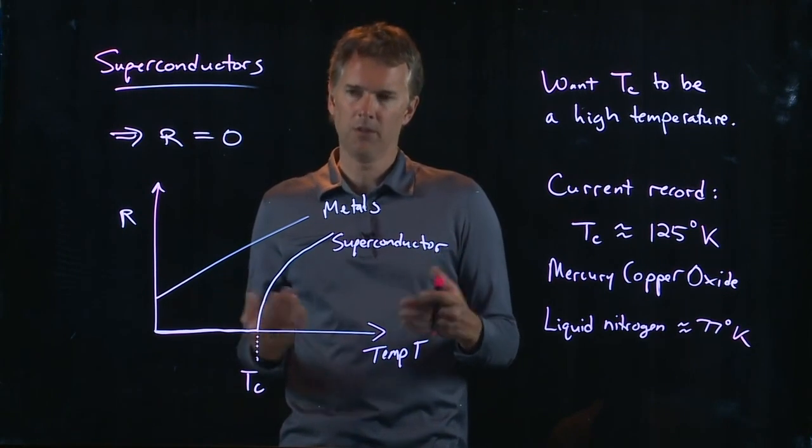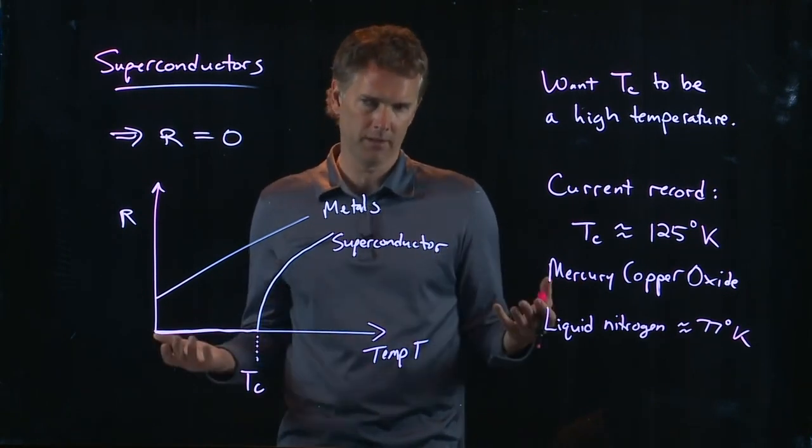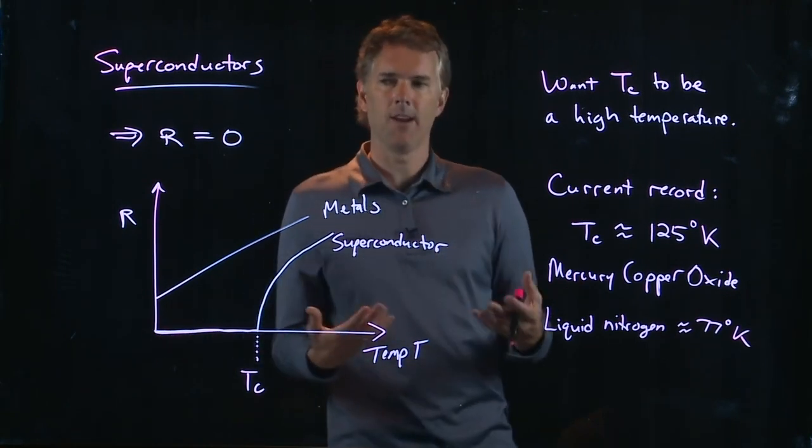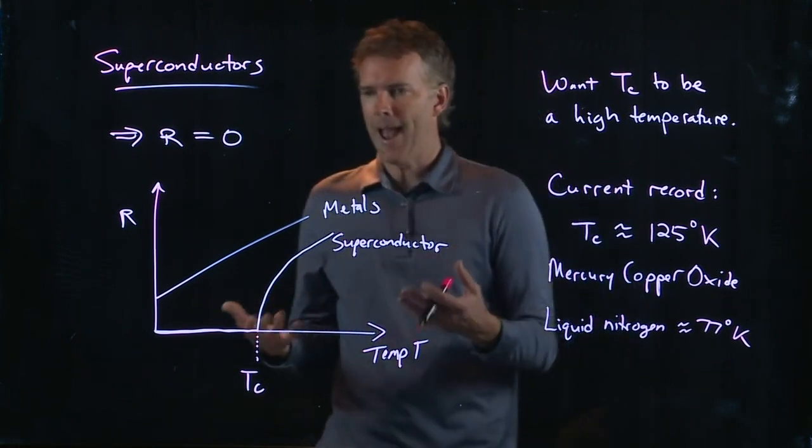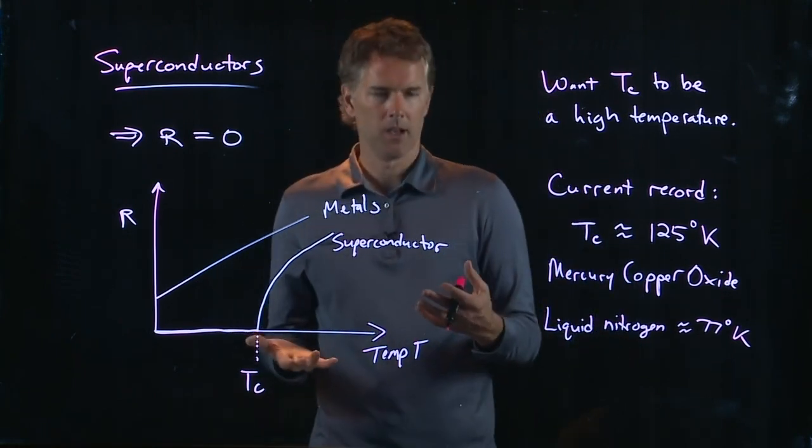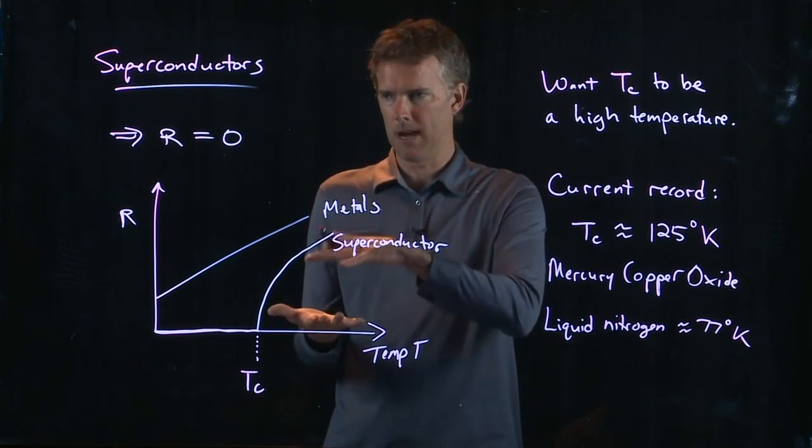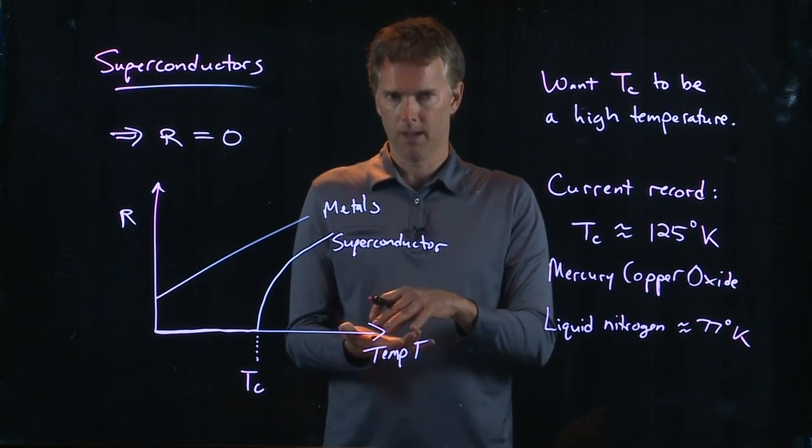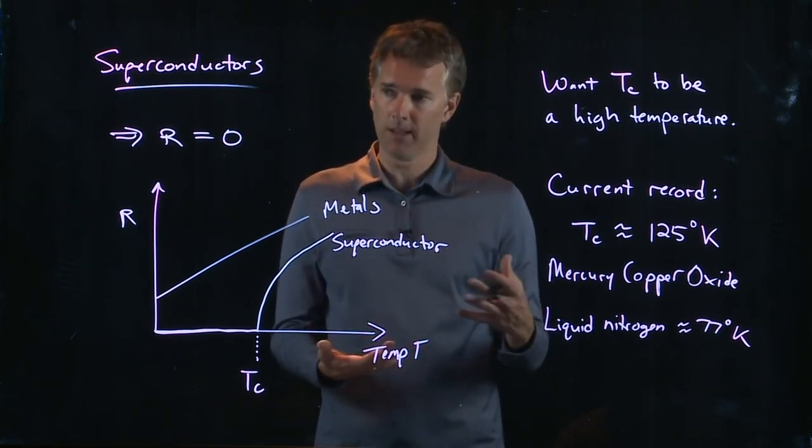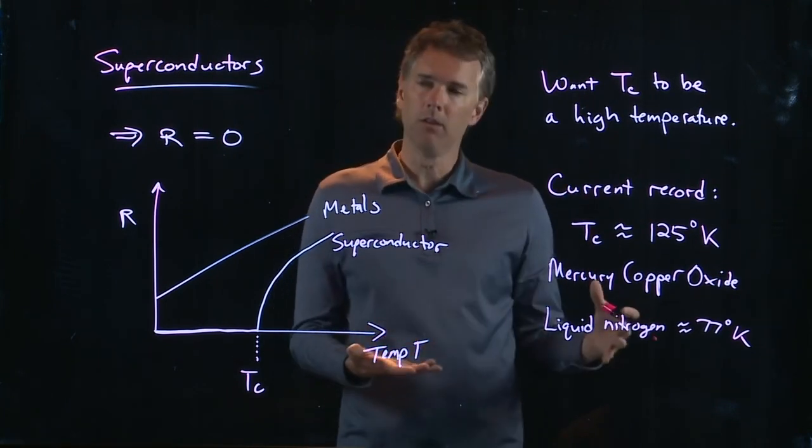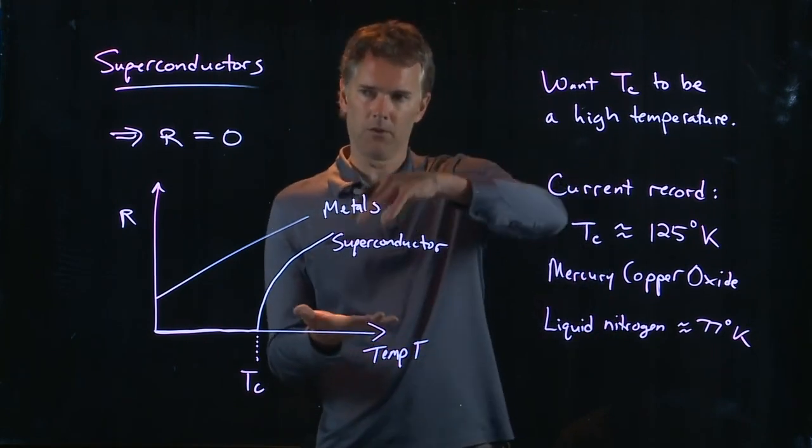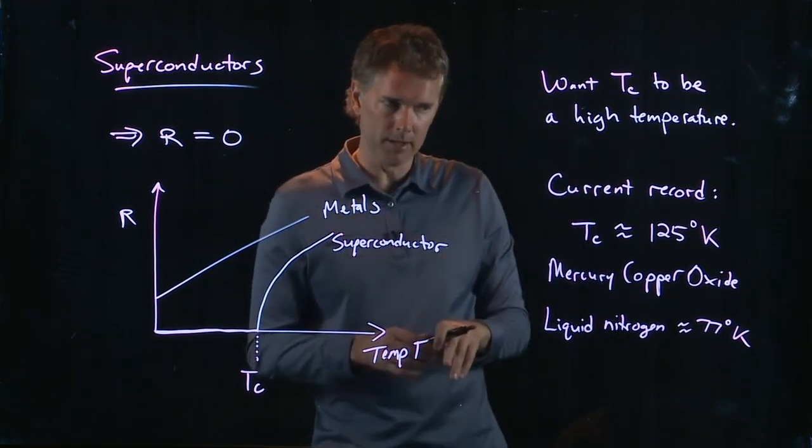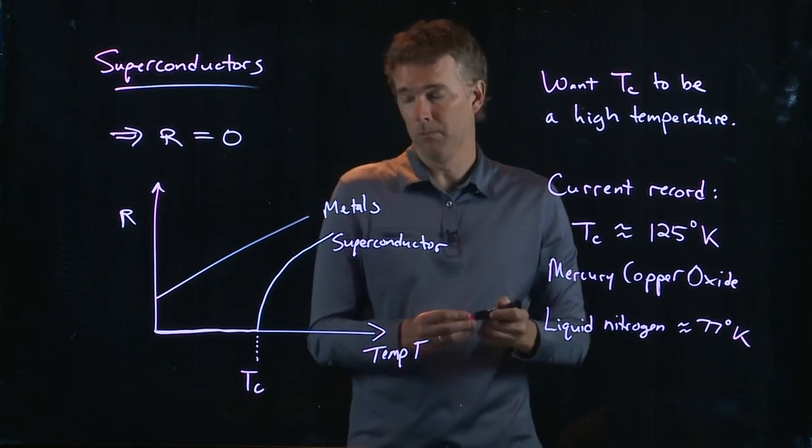And this has interesting implications. Not just for carrying electricity, but for carrying magnets on top of them. If you take a magnet and you put it on top of a superconductor, it levitates above the superconductor. And so, this is the goal behind these levitating trains. Make superconductors, put magnets on the train, let it levitate above it, and then you can move things really easily.